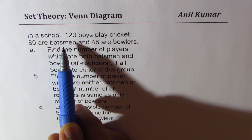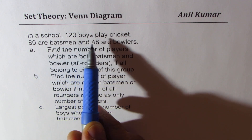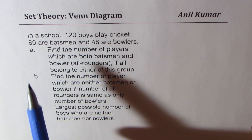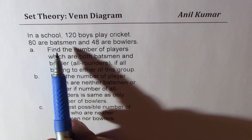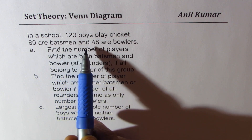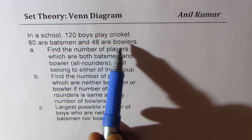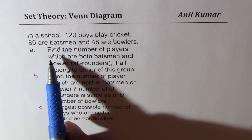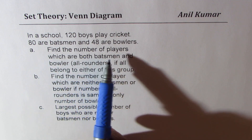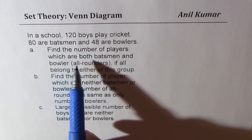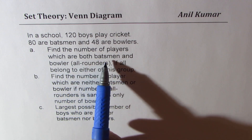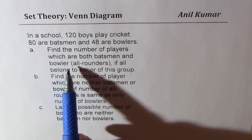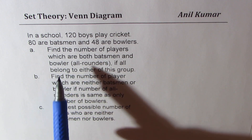In a school, 120 boys play cricket. 80 are batsmen and 48 are ballers. Find the number of players which are both batsmen and ballers — we call them all-rounders.